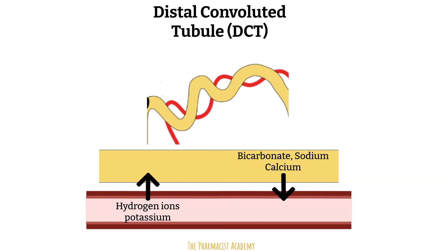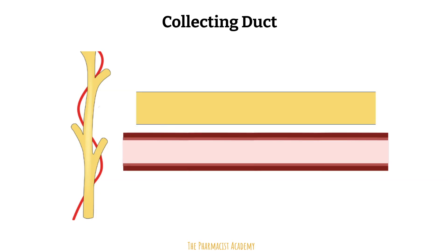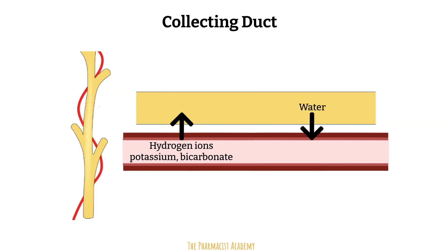Lastly, the filtrate will make its final stop at the collecting duct. Over here, hydrogen ions, potassium, and bicarbonate are secreted into the filtrate. Depending on the body's volume status, water may be reabsorbed back into the blood through aquaporins, or water channels.